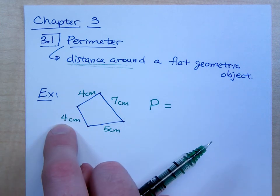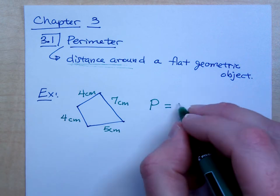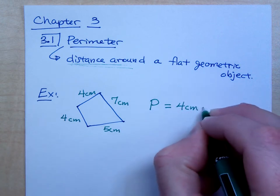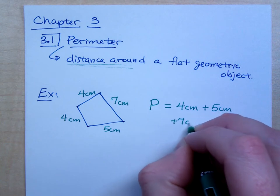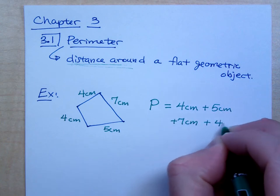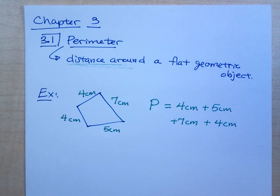You just add up all the sides, right? So that means you would have to add the four centimeters to five centimeters to seven centimeters, and then there's another four centimeter length, right? And when you add all of these together, what's your total length? It's what? 20?